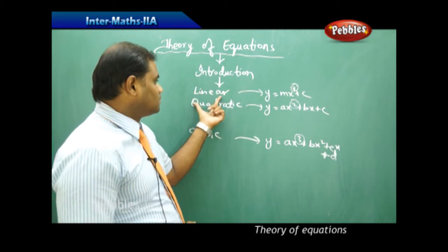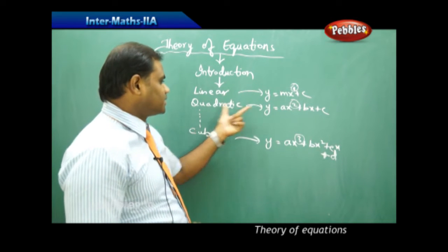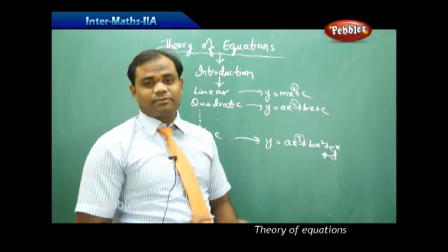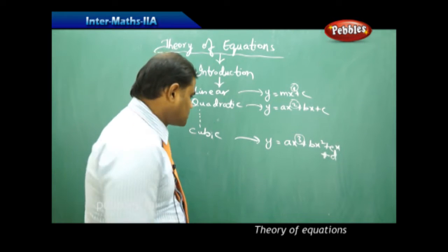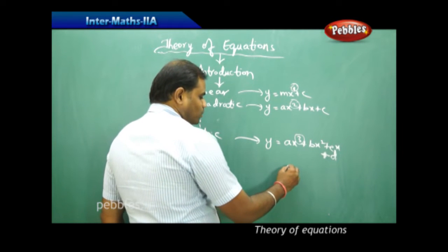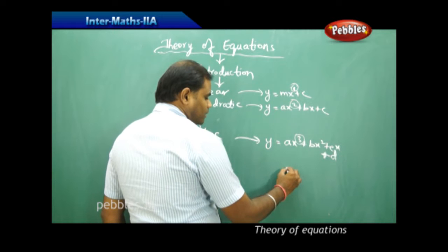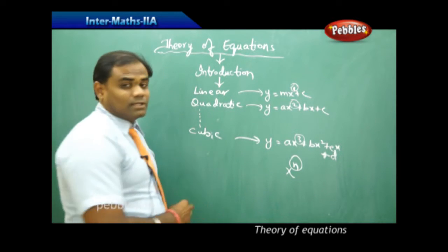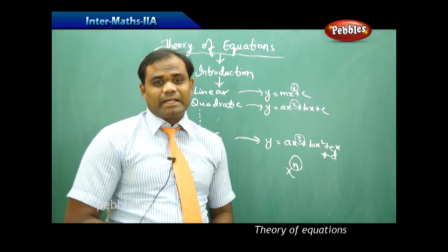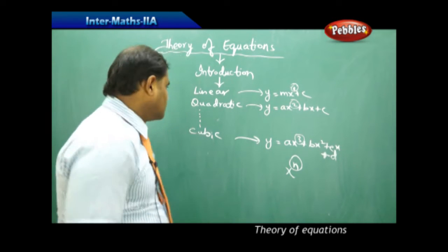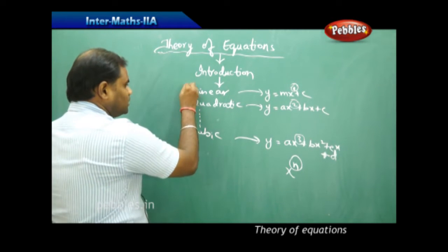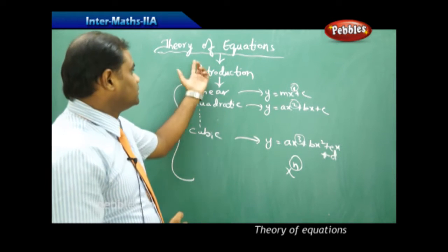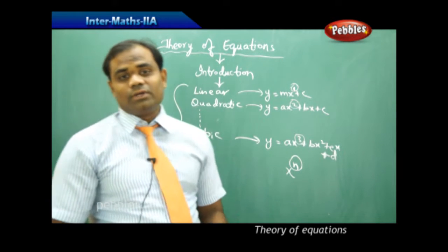For linear, the power is 1; for quadratic, the highest power is 2; for cubic, the highest power is 3. Now, what happens if I have an equation where the power is n is what we're going to discuss, and this theory of discussing each of the powers in expressions is called theory of equations.